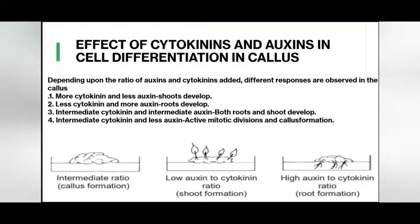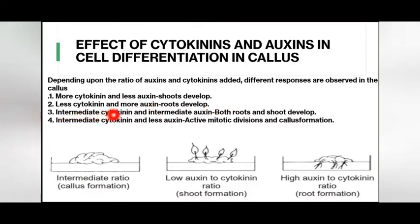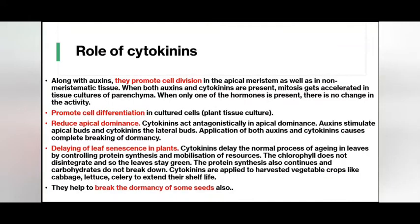The effect of cytokinin and auxins on cell differentiation in callus: depending upon the ratio of auxins and cytokinin added, different responses are observed in the callus. More cytokinin and less auxin leads to shoot development. Less cytokinin and more auxin leads to root development. Intermediate concentrations of cytokinin and auxin lead to both roots and shoots developing. Intermediate cytokinin and less auxin results in active mitotic divisions and callus formation.